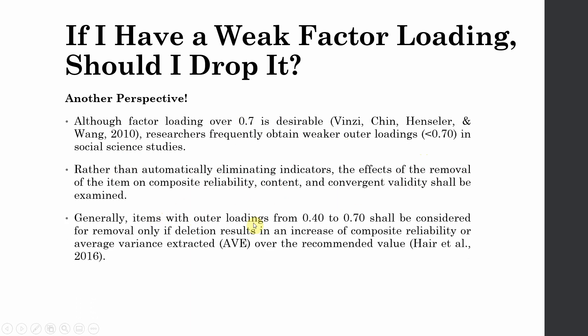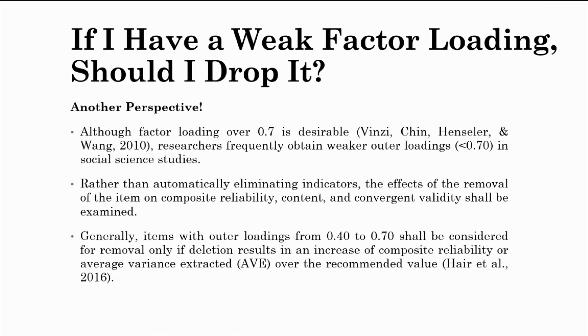Generally, items with outer loadings from 0.40 to 0.70 shall be considered for removal only if the deletion will increase the composite reliability and AVE over the recommended value. This is something that I believe in and should be done. We should not go on and delete items because they have got low loadings. Instead, items should be deleted keeping in mind the operationalization of the concept, the content validity, and shall only be deleted if their deletion can increase the composite reliability and average variance extracted over the recommended value. Thank you very much.